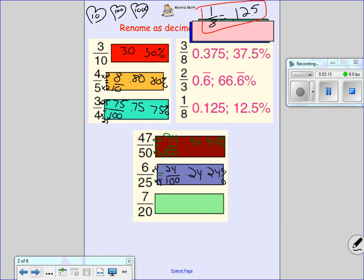Last one here, 20 goes into 100. We're going times 5. Times 5 gives me 35. 0.35, which is 35 percent.